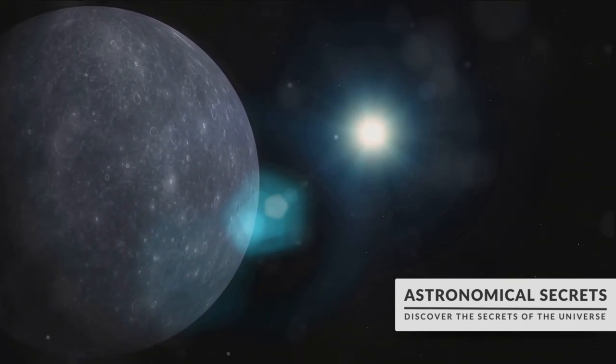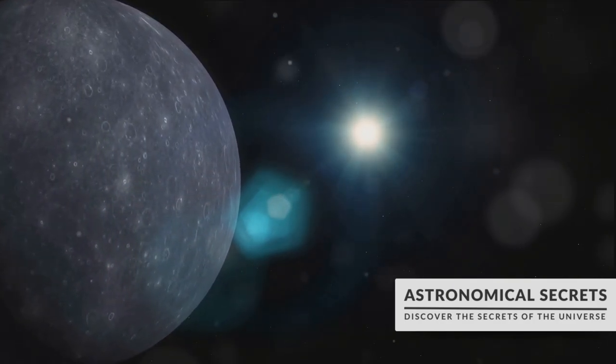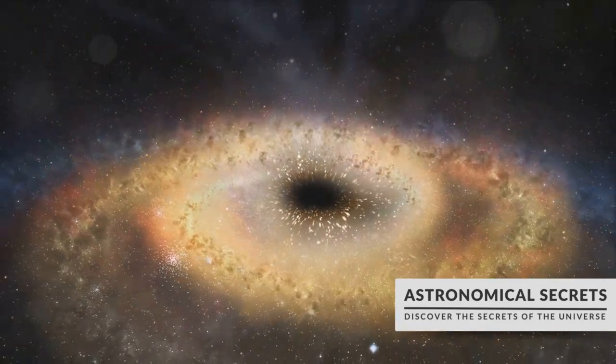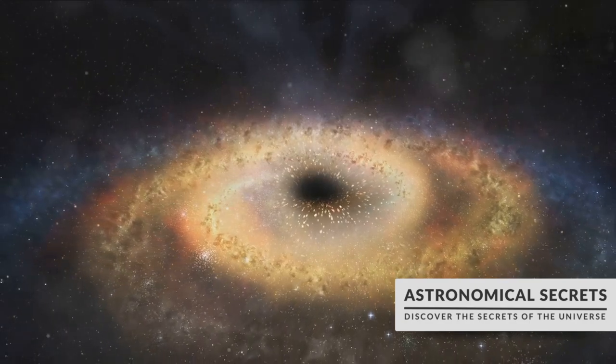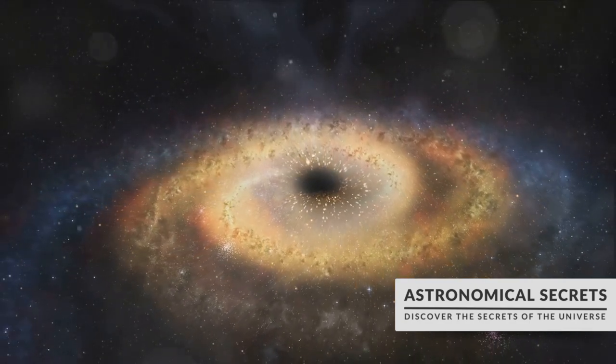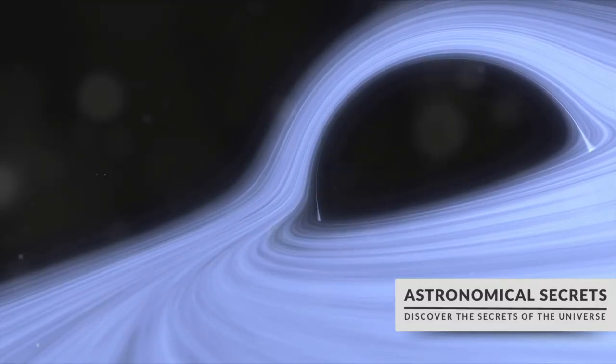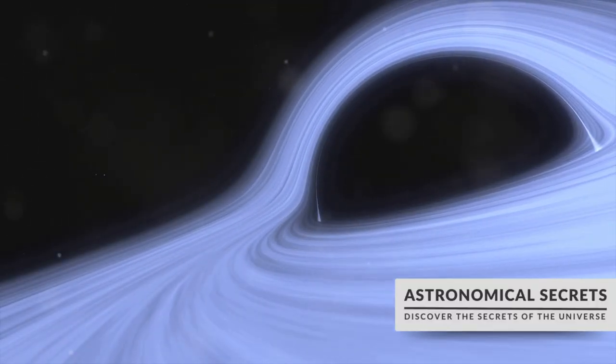These enormous celestial bodies are out there, silently existing in the vast expanse of space. They're not just floating around randomly either. These supermassive black holes sit at the centers of galaxies, including our very own Milky Way. They're the titanic anchors, holding galaxies together in their gravitational grip.